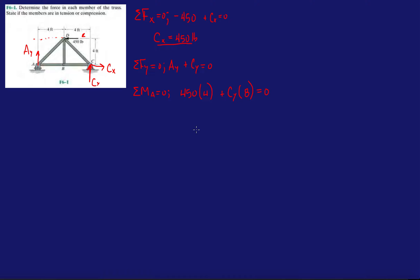So 450 times four divided by eight. And then we get CY is negative 225 pounds. So right here, I assumed going up, but it's actually 225 pounds going down. And that means AY is also equal to 225 pounds. That does it for the reaction forces. Now we're going to be getting into what we came here for, method of joints.